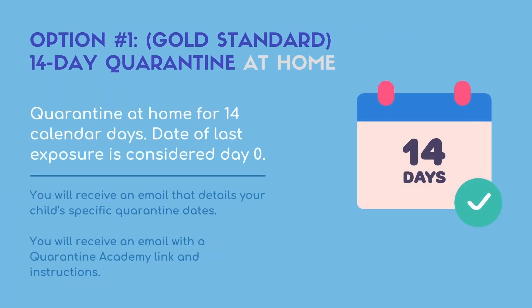Option one: the 14-day quarantine at home, what we consider our gold standard of quarantine. If you choose this option, your child will quarantine at home for 14 calendar days. Please note that the date of the last exposure is considered day zero of quarantine. You will receive an email that details your child's specific quarantine dates and a quarantine academy link and instructions.